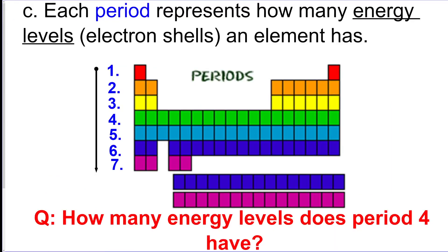Each period represents how many energy levels that the element has. Those are the rings or the orbitals. So if this is the nucleus, here's our first energy level, second energy level, third, and those are where the electrons go. Remember from the Bohr model video: two, eight, eighteen. So row one or period one has one shell, two has two shells, three has three shells, and so on.